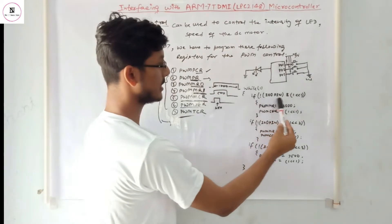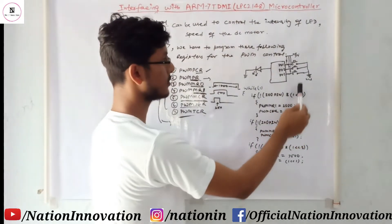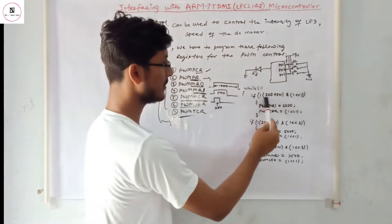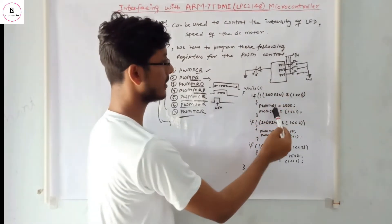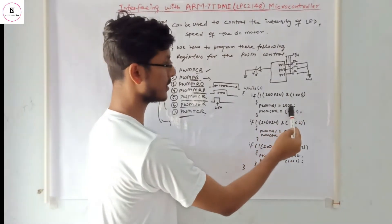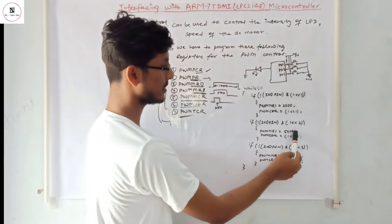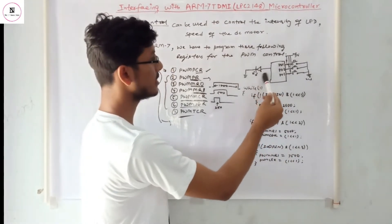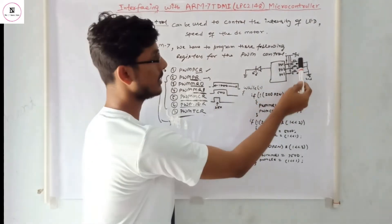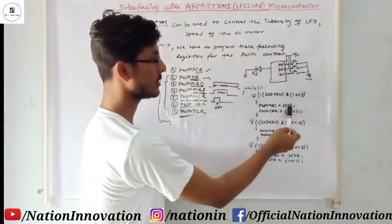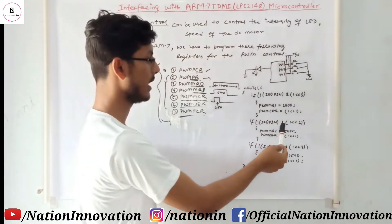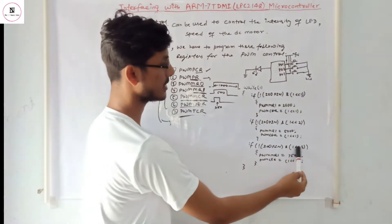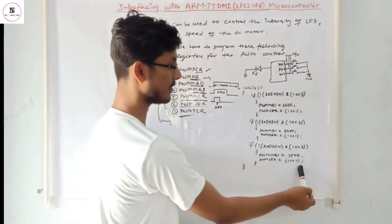In the programming section, you just have to check the status of the switch. Switches are connected on port 0, bits 1, 2, and 3. If bit 1 is 0, the PWM control gives 25% duty cycle; bit 2 gives 50% duty cycle; and bit 3 gives 75% duty cycle. In this way the intensity of the LED is controlled. If switch 1 is pressed, intensity corresponds to 25% duty cycle; switch 2 increases the intensity to 50%; and switch 3 increases it further to 75% duty cycle.